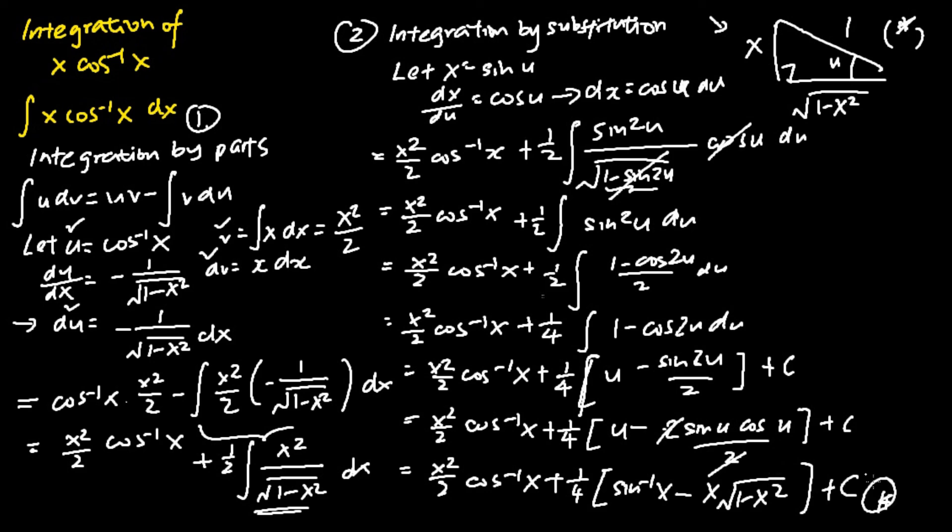And then this is the final answer. The integration of x cosine inverse x is x squared over 2 cosine inverse x plus one quarter square bracket sine inverse x minus x square root of 1 minus x squared plus c.